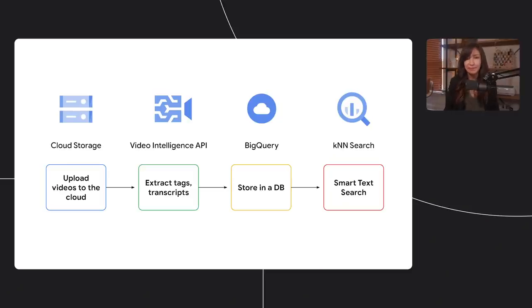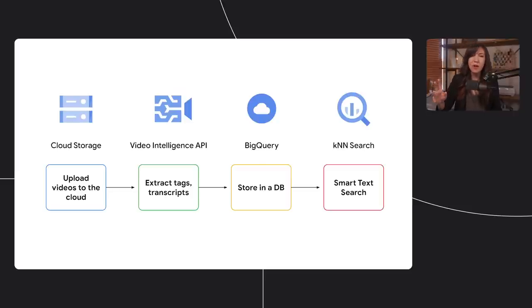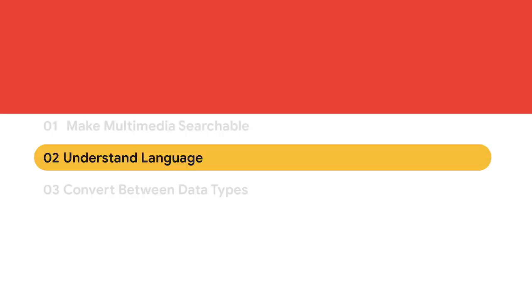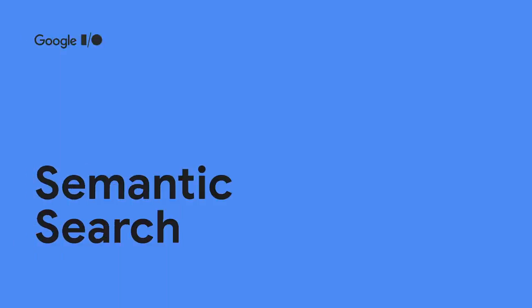Let me tell you how I built this. First, I took all my videos and uploaded them to Google Cloud Storage. Then via a Cloud Function, I triggered a machine learning model — the Video Intelligence API — which takes a video as input and spits out text: transcripts and vision-identified tags. I take all that text, put it in a database like BigQuery, and then implement a smart text search on top so you can find things without having to know exactly how people said them. Which brings us to use case number two for machine learning: understanding language, specifically through something called semantic search.